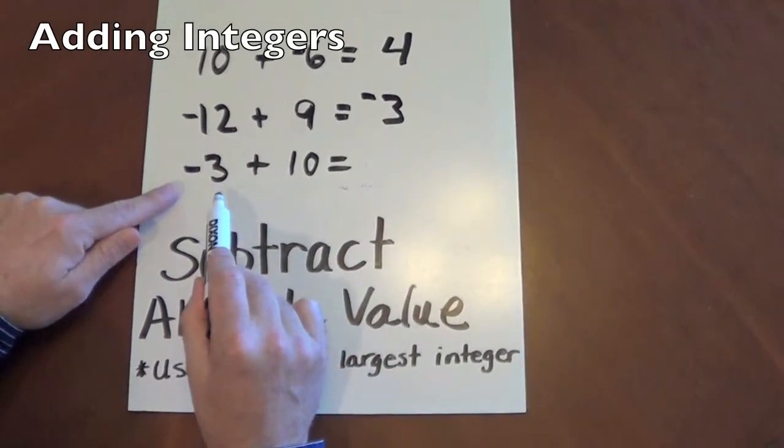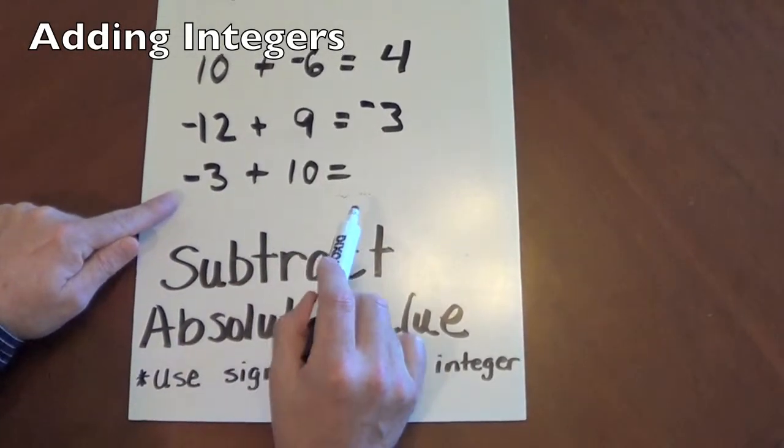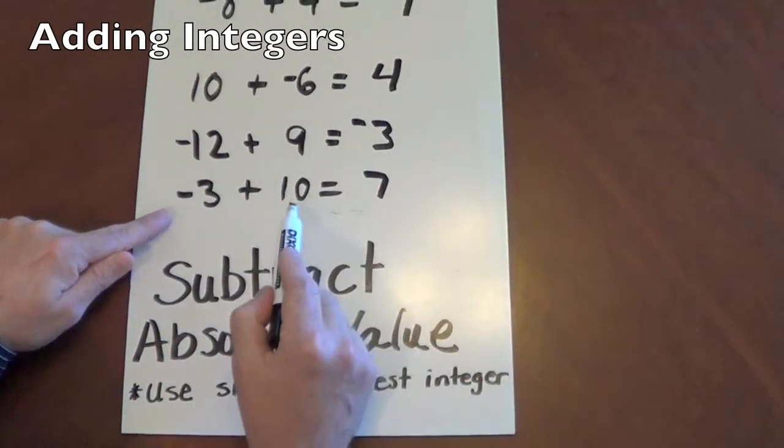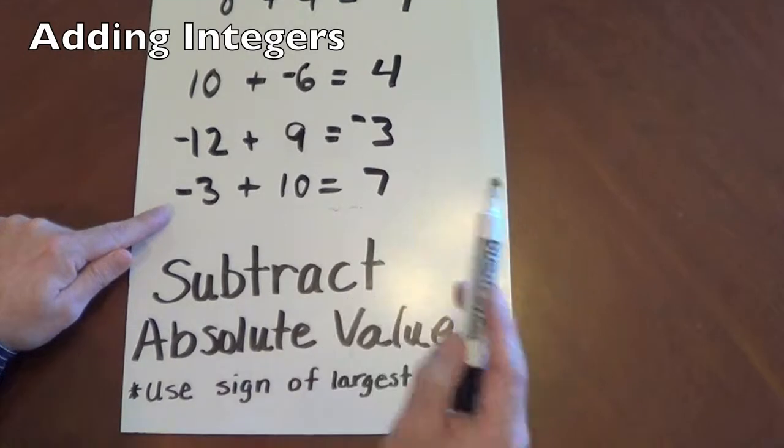10 plus negative 3, or negative 3 plus 10, we subtract and we get 7. And we take the sign of the largest integer, which is positive. So our answer is 7.